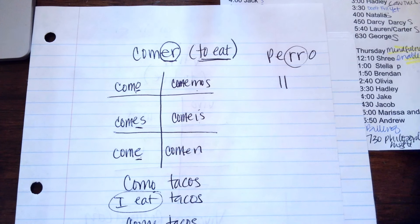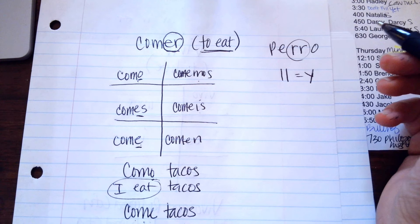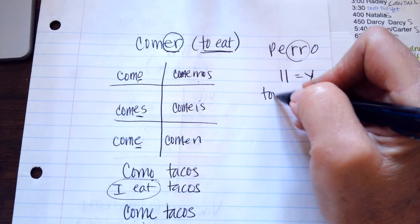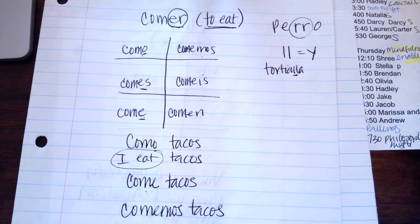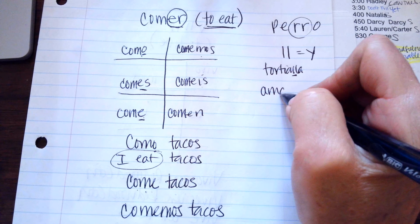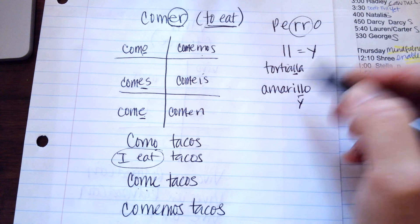LL is actually a Y sound. That's why, tortilla. Tortilla. It's a ya sound. The color, amarillo. So, this is a Y sound. Amarillo.